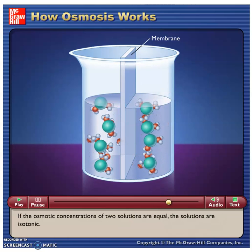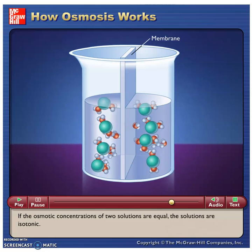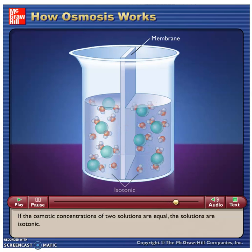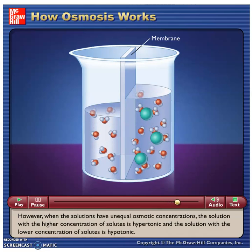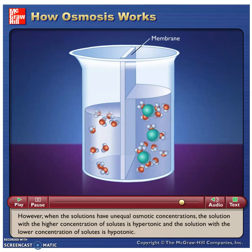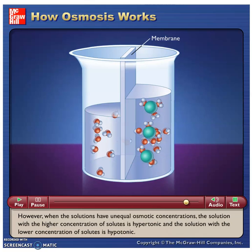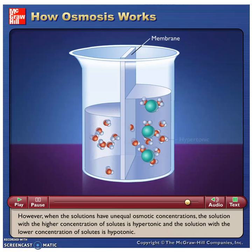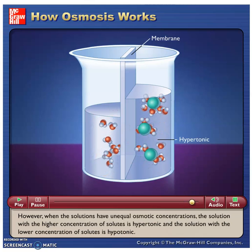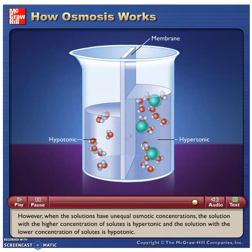If the osmotic concentrations of two solutions are equal, the solutions are isotonic. However, when the solutions have unequal osmotic concentrations, the solution with the higher concentration of solutes is hypertonic, and the solution with the lower concentration of solutes is hypotonic.